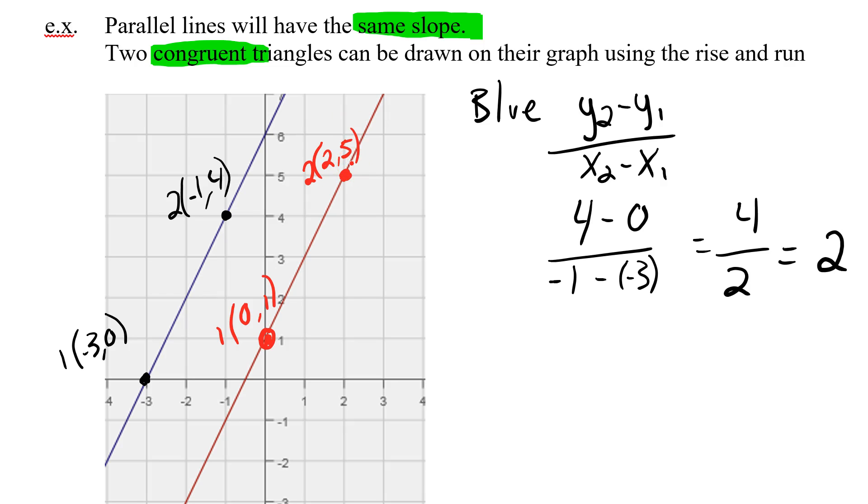So now let's get the slope of our red line. So again, formula: y2 minus y1 over x2 minus x1. So the y value from point 2 is 5 minus the y value from point 1, which is 1, divided by the x value of point 2, which is 2, minus the x value of point 1, which is 0. So we've got 4 over 2, which gives me a slope of 2.